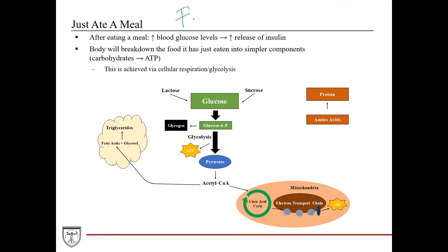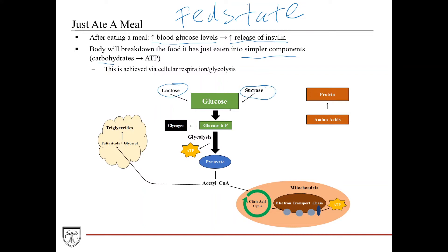In the fed state — just after eating a meal — blood glucose levels increase, stimulating release of insulin. The body takes up glucose in response to insulin and breaks it down into simpler components. Carbohydrates are broken down mainly through glycolysis. Whatever you ingested — lactose, sucrose, or glucose — they all funnel toward glucose, which is broken down via glycolysis to pyruvate and acetyl-CoA, producing ATP. Acetyl-CoA then enters the citric acid cycle, producing NADH and FADH2 to enter the electron transport chain for additional ATP.